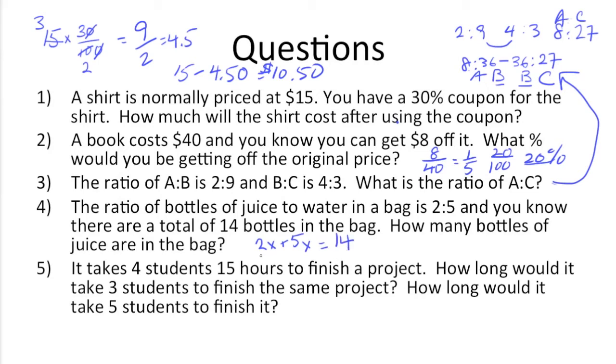And we know that 2X represents the number of bottles of juices, and 5X represents the water, so we know that juice plus water should equal the total number of bottles, which is 14. So 2X plus 5X is 7X, which is equal to 14, and X is equal to 2. We're not done there because we know that juice is represented by 2X, so we need to multiply 2 times 2, which gets us 4 bottles of juice.